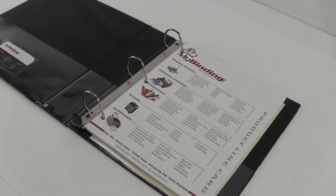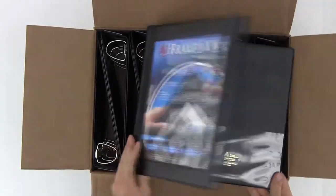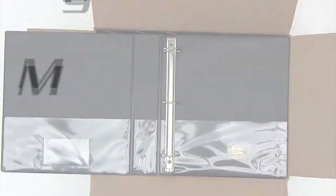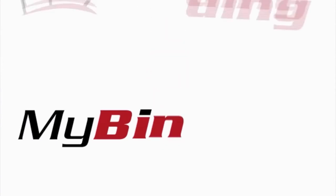We sell them 12 per box and that's it. That's the Avery 1.5-inch black-framed one-touch EZD ring view binder. For more demos, reviews and how-tos, check out MyBinding.com.